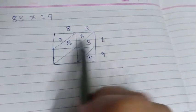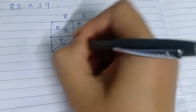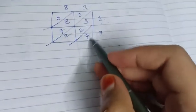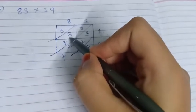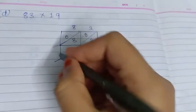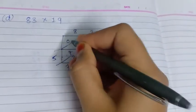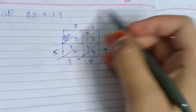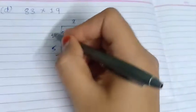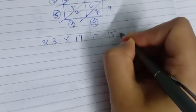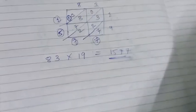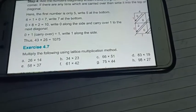8 × 9 = 72, so write 7 and 2. Now do the diagonal addition: 7 as it is; 2 + 2 = 4; 4 + 3 = 7; 7 + 8 + 0 = 15, so write 5 and carry 1; 1 + 0 = 1. So the answer is: 83 × 19 = 1577.